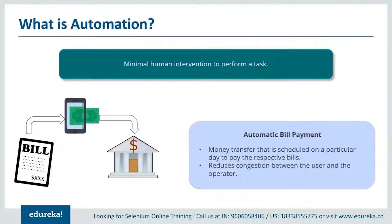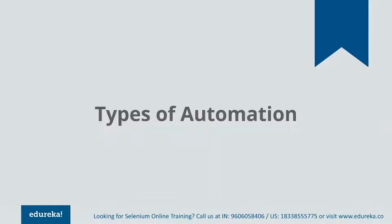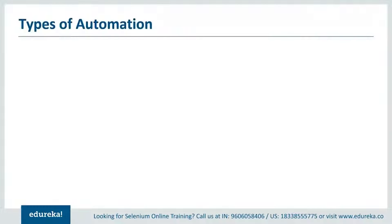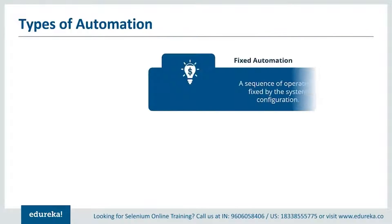Now that you've understood what automation is, let's understand the different types. There are basically three types of automation: fixed automation, programmable automation, and flexible automation. Fixed automation is the sequence of various operations that remains fixed and cannot be scheduled or customized by the user. This type is mainly used in the mechanical industry to carry out a desired job.